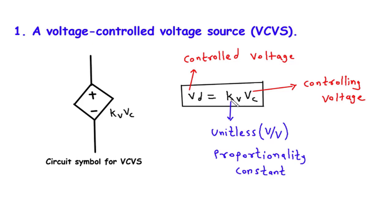Essentially, K tells us how much the output voltage will change in response to a given change in the controlling voltage. By adjusting the value of K and manipulating the controlling voltage VC, we have precise control over the output voltage VD of the VCVS. Increasing the value of K will result in a larger change in the output voltage for a given change in the controlling voltage, making the VCVS more sensitive.